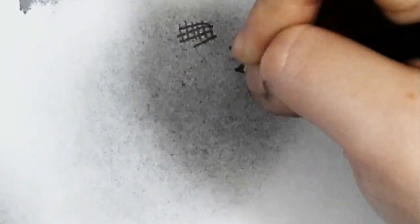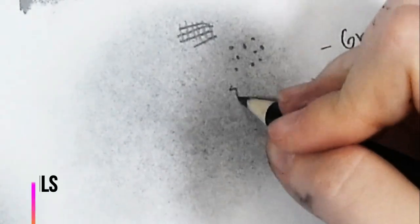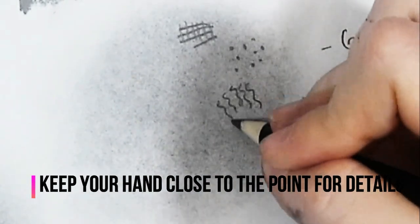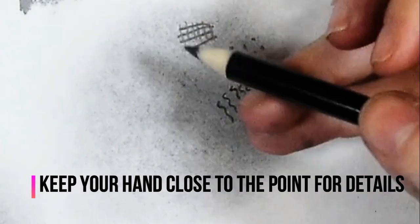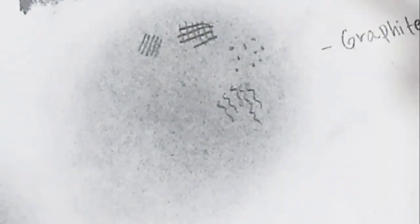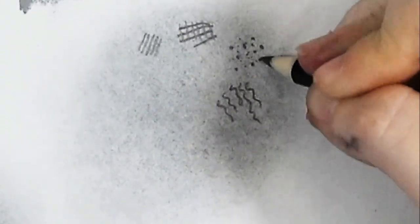When creating small details such as dots, lines or circles, we want our hand to be as close to the point of the pencil as possible. This will allow you for much better control and to detail smaller areas that are otherwise harder to detail.